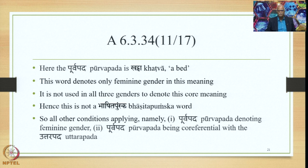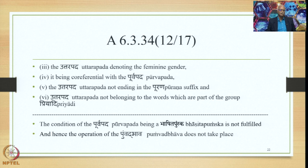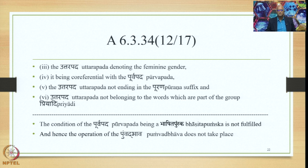The Purvapada Khatva denotes only feminine gender in this meaning — it is not used in all three genders to denote this core meaning, hence it is not a Bhashita Pumsaka word. All other conditions apply: Purvapada denoting feminine gender, Purvapada being co-referential with the Uttarapada, Uttarapada denoting feminine gender and being co-referential, Uttarapada not ending in the Purana suffix, and Uttarapada not belonging to the Priyadi group. The condition of the Purvapada being Bhashita Pumsaka is not fulfilled, and hence the operation of Pummad Bhava does not take place.